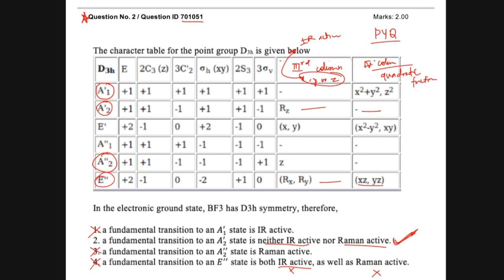To clarify which representations are actually active: E-dash is IR active because it has X and Y, and A2-double-dash is also IR active because it has Z. For Raman activity, A1-dash is Raman active because it has a quadratic function, and E-dash is also Raman active because it has quadratic functions. I hope you understood the concept.